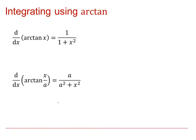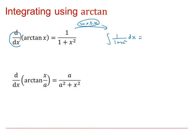What happens if we start to look at integrating using arctan? If we take this result and integrate both sides with respect to x, integrating the right-hand side gives the integral of 1 over 1 plus x squared dx, and integrating the derivative of arctan x leaves us with arctan x plus c.